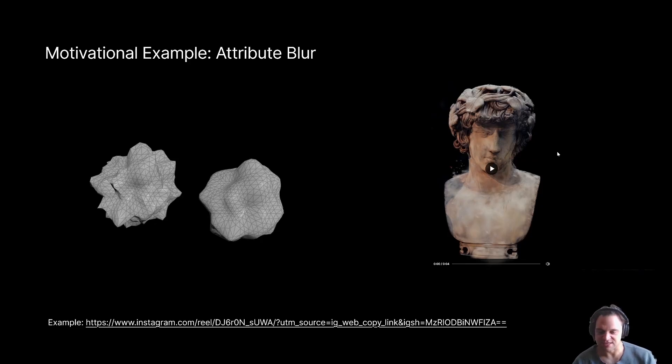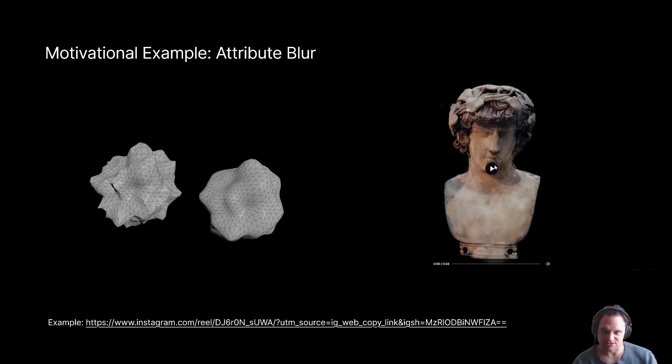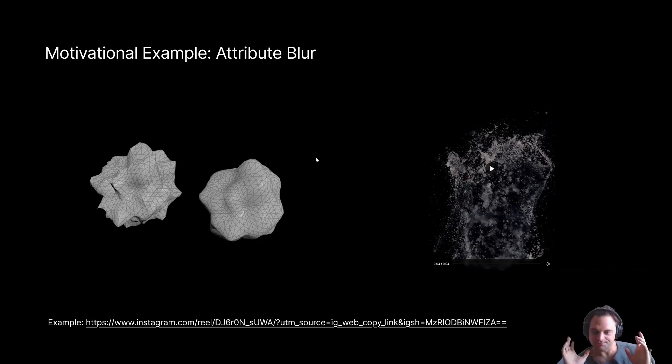Attribute Blur is one of those examples. You can see in this video here, and also in the image on the side, what Attribute Blur can let you do. It really will take the attribute values of the neighboring points or primitives, whatever the geometry we're operating over is, and it will calculate the attribute value of each specific primitive by using its neighbors. That can let you do...